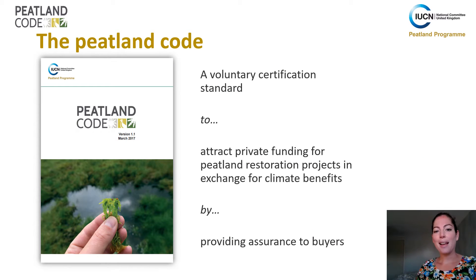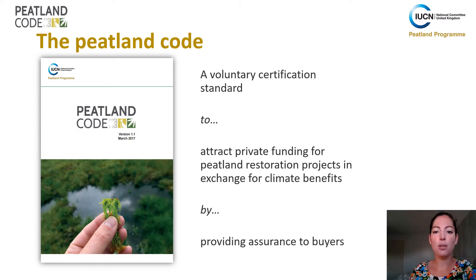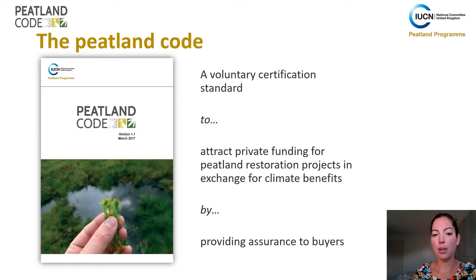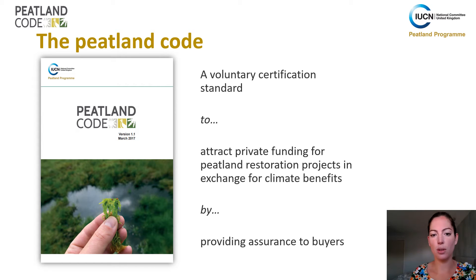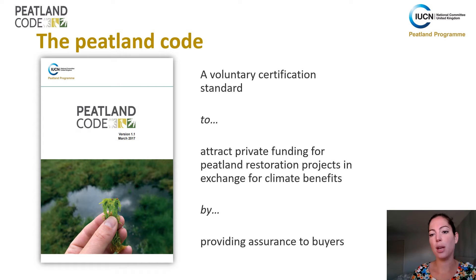So if you are a landowner and you have a degraded peatland that is eligible, you can use the Peatland Code and follow the steps that are set out. You can then get carbon units at the end that you can sell to companies that are looking to offset their emissions. The Peatland Code is a voluntary certification standard to attract private funding for peatland restoration projects in exchange for climate benefits, by providing assurances to buyers.